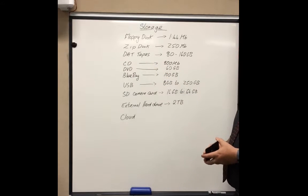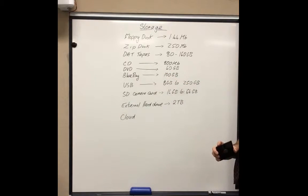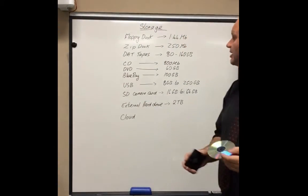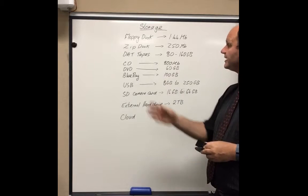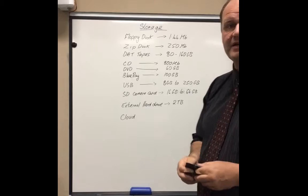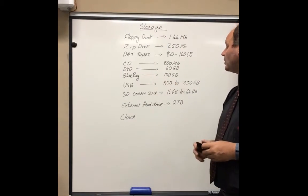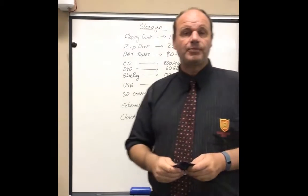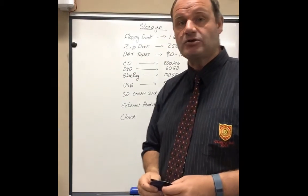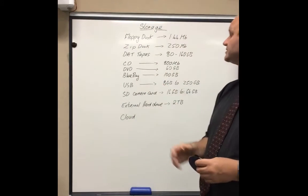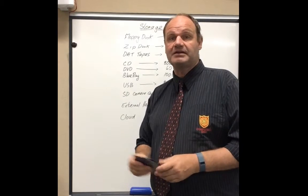Then we moved to storage mediums with a bit more capacity. We had the compact disk, which was and still is in some cases used to archive information. Then digital versatile disks — DVDs — for videos, holding something like 60 gigabytes. A little later we had Blu-ray, which could hold an awful lot more — 100 gigabytes — so you could store something like 20 movies. You would need a particular player to show Blu-ray discs, and nowadays they are certainly being used a lot less.